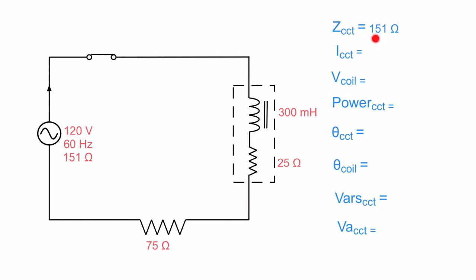Now we plug in that 151 ohms of impedance. To find circuit current, we take the source voltage and divide it by the overall opposition to current flow: 120 volts ÷ 151 ohms. That works out to be 795 milliamps. Since this is a series circuit, current stays the same throughout — 795 milliamps flows through the inductor, through the inductor's internal resistance, and across the external resistor.